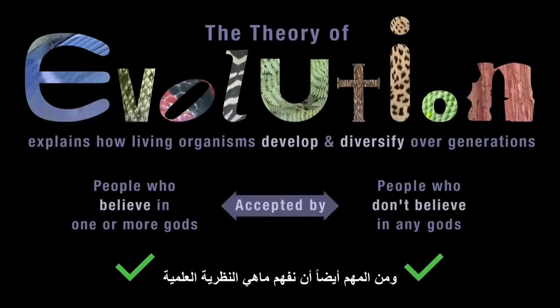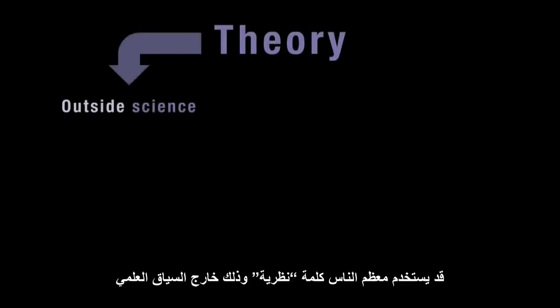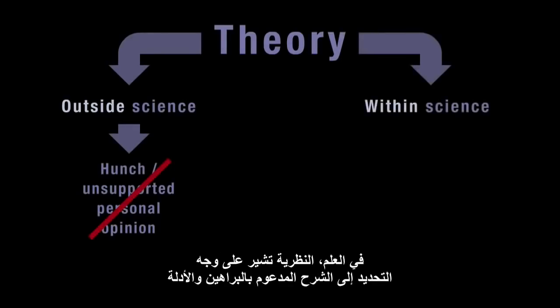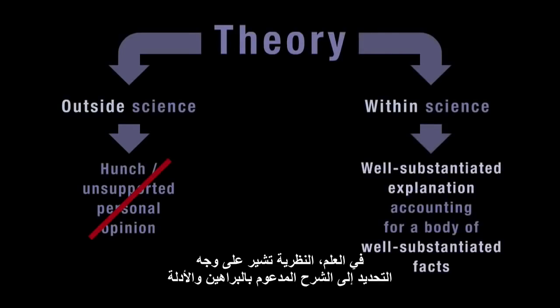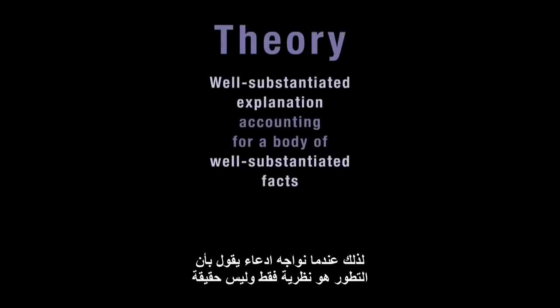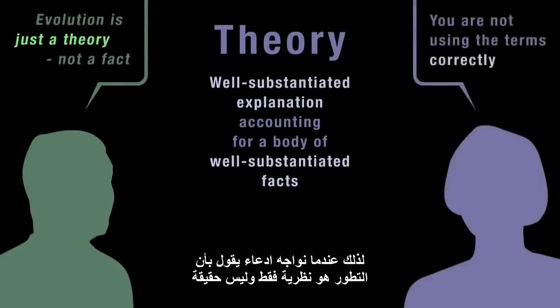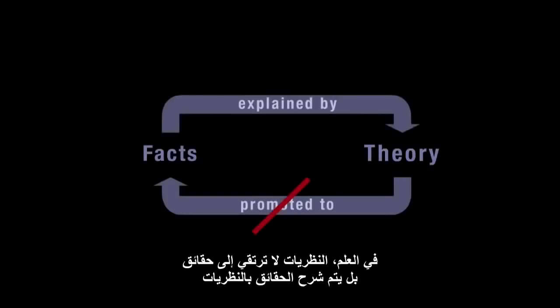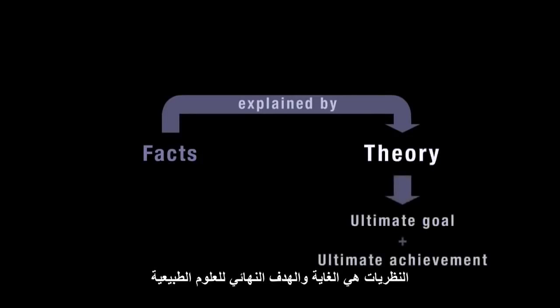It's also important to understand what a scientific theory is. Outside science, people often use the word theory to refer to a hunch or unsupported personal opinion. This is not what the word means in science. In science, a theory refers specifically to a well-substantiated explanation which accounts for a body of well-substantiated facts. So whenever we encounter a statement like 'evolution is just a theory, not a fact', this tells us that whoever made the statement is not using the terms correctly. In science, theories don't get promoted to facts — facts are explained by theories. Because of their explanatory power, theories are the ultimate goal and the ultimate achievement in the sciences of nature.